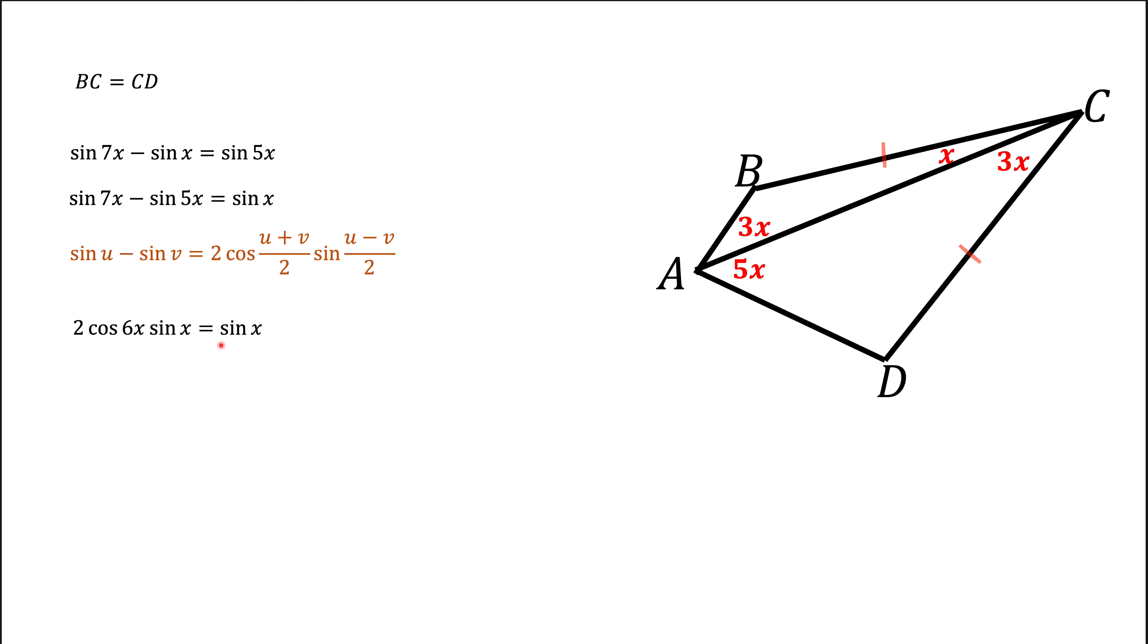Now again, we see sine of x on both sides. Sine of x is not 0. We can get rid of it and get 2 cosine of 6x equals 1. Divide by 2, we get cosine of 6x equals 1 half.